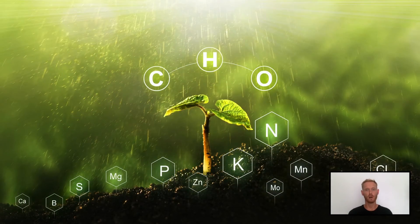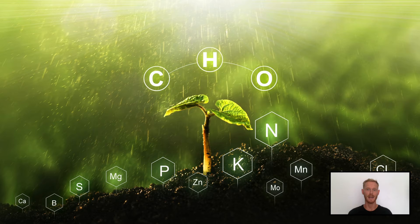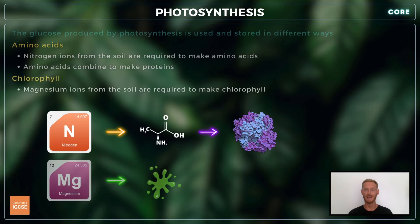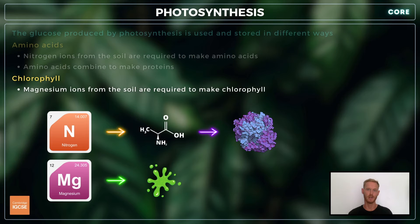In addition to their requirement for water and carbon dioxide, plants also need a supply of certain minerals, including nitrogen and magnesium. Nitrogen ions combine with glucose to make amino acids, which are subsequently joined together to build proteins, and magnesium is essential for the production of the photosynthetic pigment chlorophyll.